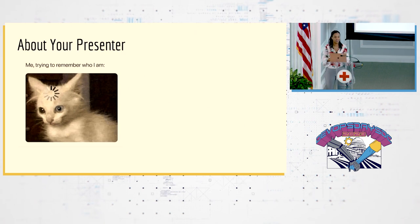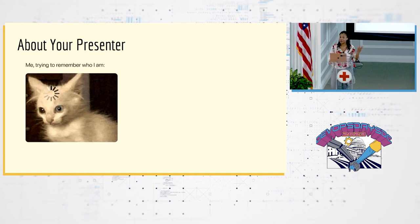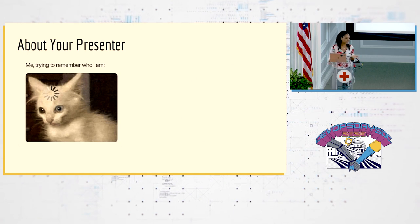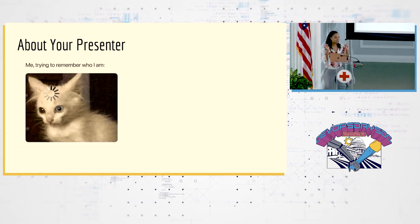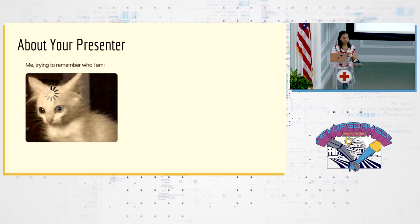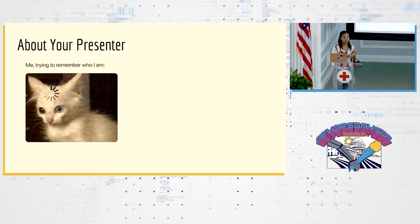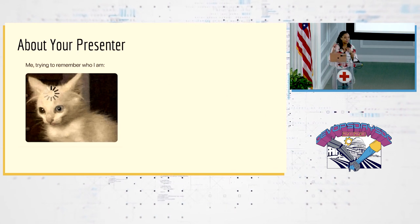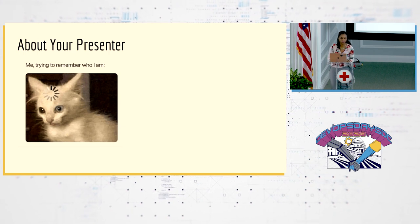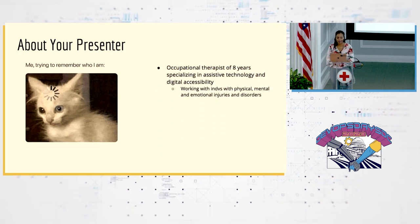In the accessibility field we joke a lot about how everyone just thinks about alt text when it comes to accessibility. One of the things I like to do is try to create alt text for memes because it's really hard. I want you to think about how you would caption these — it's kind of fun.